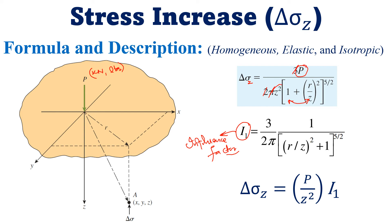This influence factor, called I1, when multiplied with the remaining terms — P in the numerator and z² in the denominator — gives us delta sigma z. So we replace the term (3/2π) × 1/((r/z)² + 1)^(5/2) with I1, and the formula becomes delta sigma z = I1 × P/z². We calculate I1 separately, then substitute the values of I1, P, and z² to find delta sigma z.